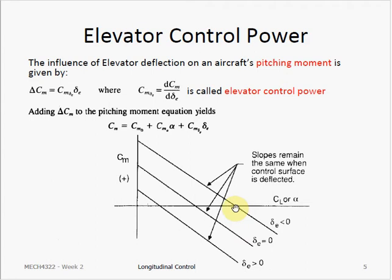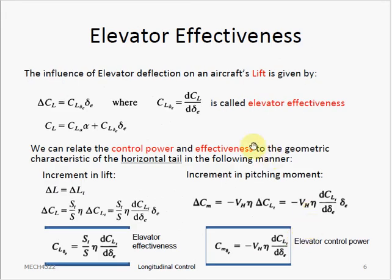What changes is the trim point — the aircraft with different elevator deflections can be trimmed at different angles of attack. So if you want to change the aircraft's trim condition, for example to trim at a higher angle of attack, you can find how much elevator deflection is required. Elevator effectiveness CL_delta_e describes the change in lift coefficient due to elevator deflection. If we deflect the elevator, the aircraft's lift and moment will both change. We can derive equations for elevator control power and elevator effectiveness by computing the increment of moment or lift.